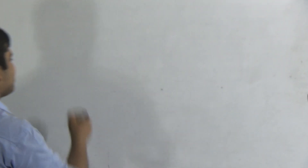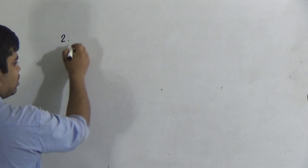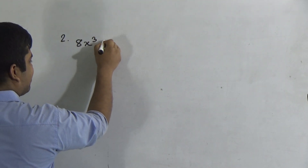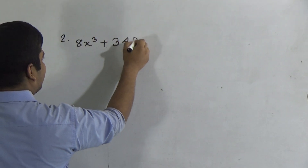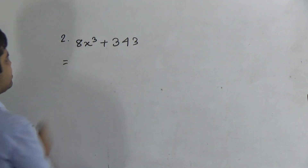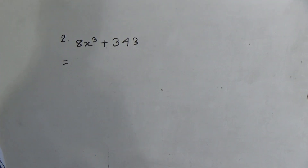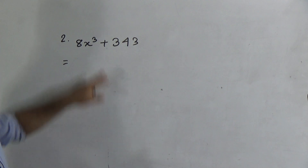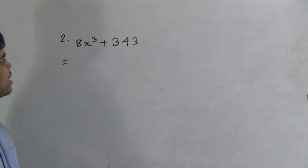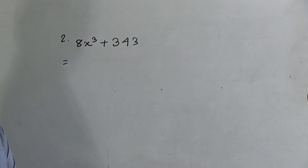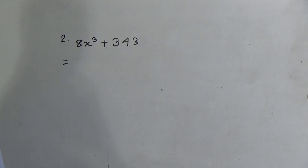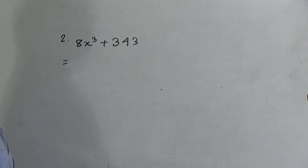First question, question number 2: 8x³ + 343. When we want to resolve an expression into factors, we first check if any number is common. If common, we take it out first. Then we check if any formula is applicable. Here, 8 is an even number and 343 is an odd number, so no number is common, and there is no common algebraic term.